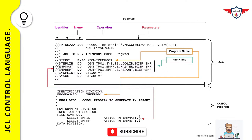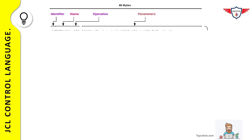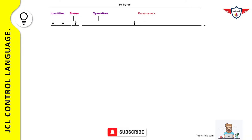Before discussing job control statements in detail, let's cover two important topics: the coding rules for writing JCL, and JCL parameters — keyword and positional — which are used to define control statements. JCL statements are coded as 80-byte records. The first 72 bytes are used for JCL statements, and the last 8 bytes are reserved for optional sequence numbers. No statement should go beyond column 71.